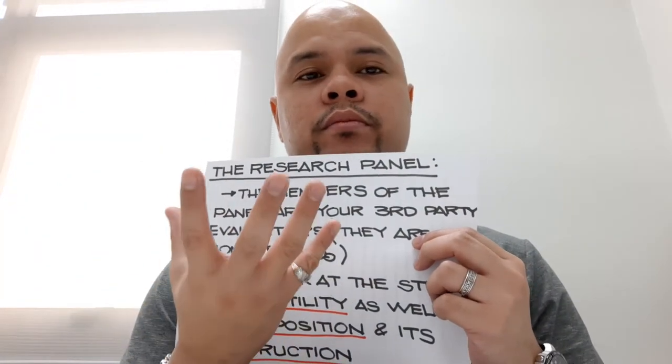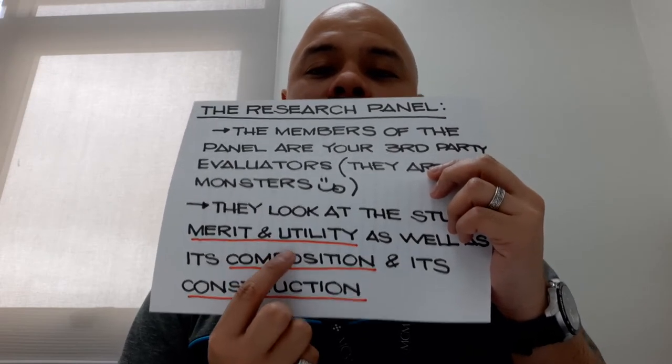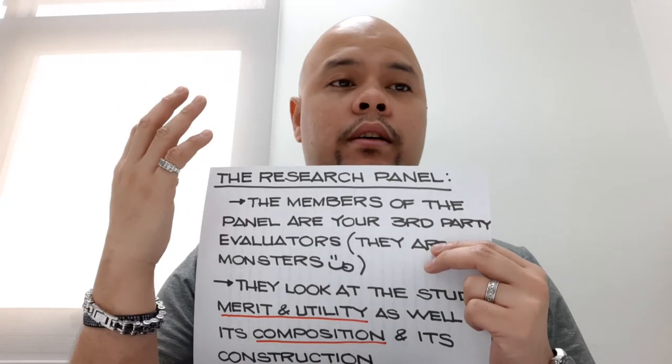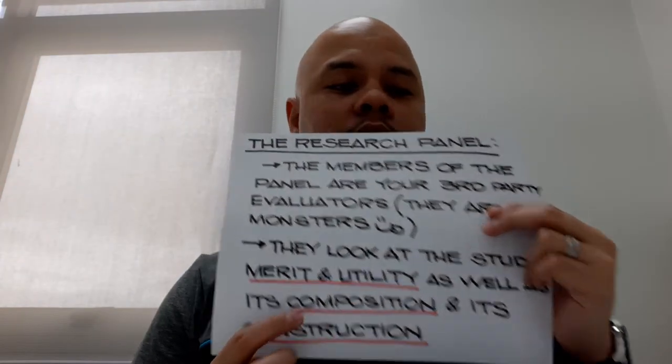Aside from merit and utility, which I think is more of substance, we are also going to look at the composition of your paper — whether you have followed the recommended content of each part of the research — and the construction. Sometimes panel members will look at margins, spacing, grammar, typeface, whether it's bold, italicized, underlined, whether it has a colon, whether it's capitalized or not. The panel members are going to look into all of that. So: merit, utility, composition, and construction — these are the four things you have to keep in mind when proposing your paper.